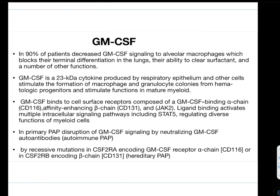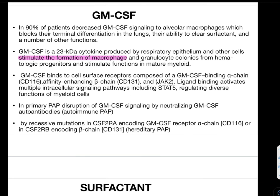GM-CSF is a 23 kilodalton cytokine produced by respiratory epithelium and other cells. It stimulates the formation of macrophages and granulocyte colonies from hematologic progenitors and stimulates function in mature myeloid cells. GM-CSF binds to a cell surface receptor composed of a GM-CSF binding alpha chain with marker CD116, and an affinity-enhancing beta chain with marker CD131.